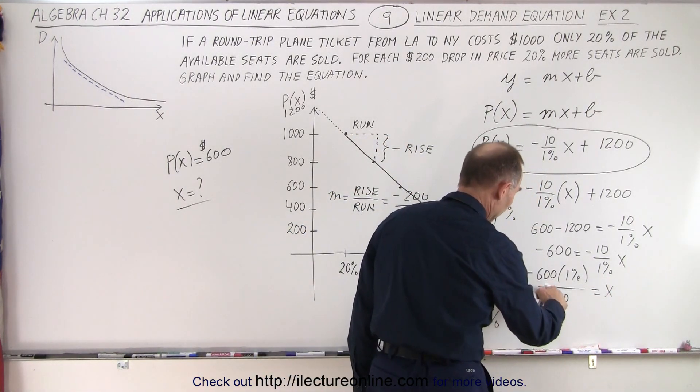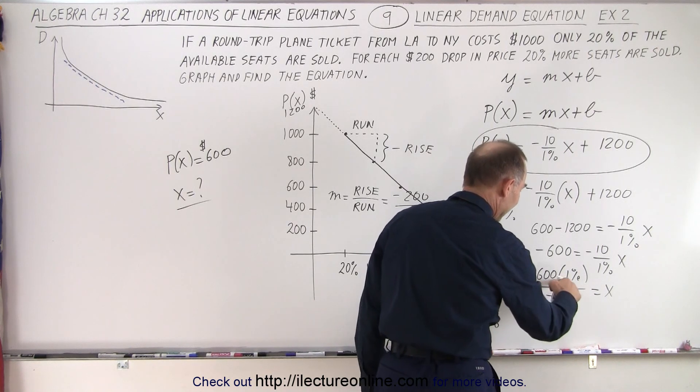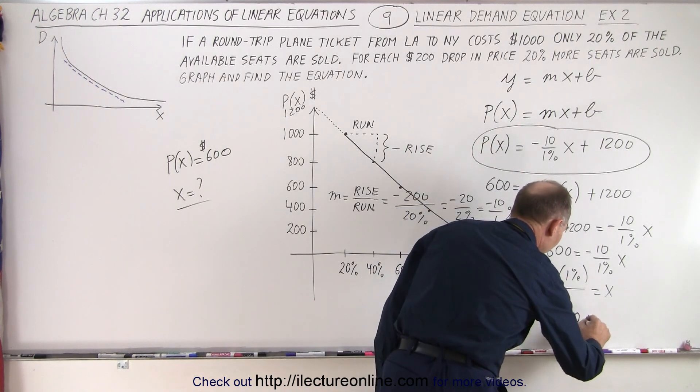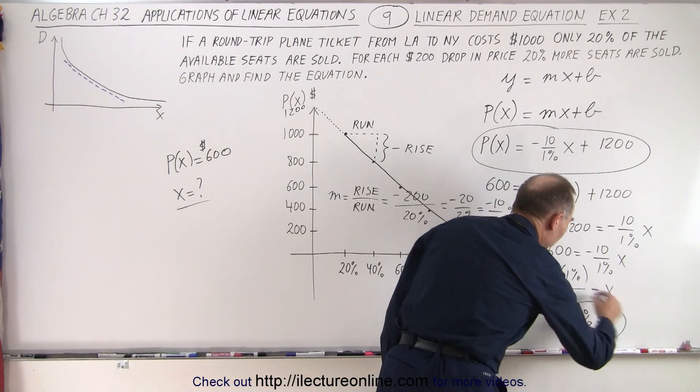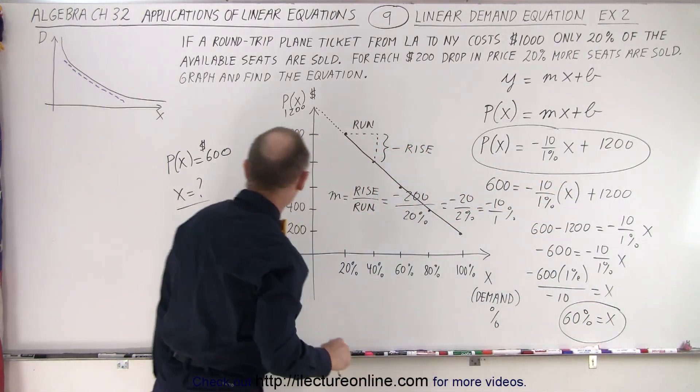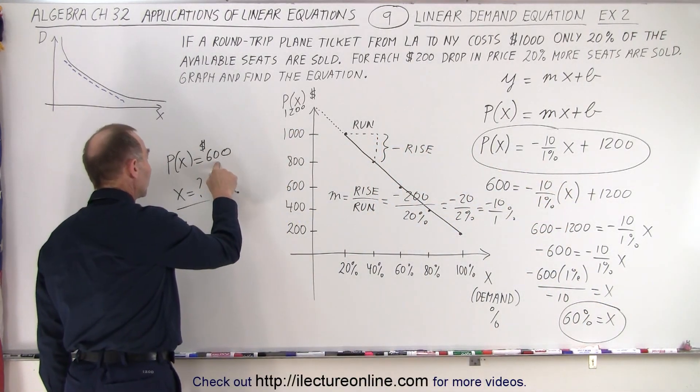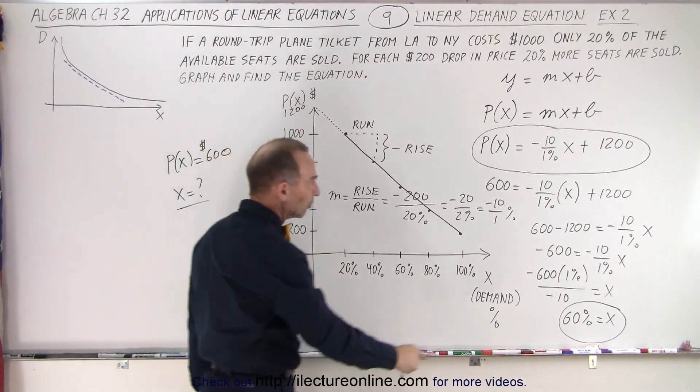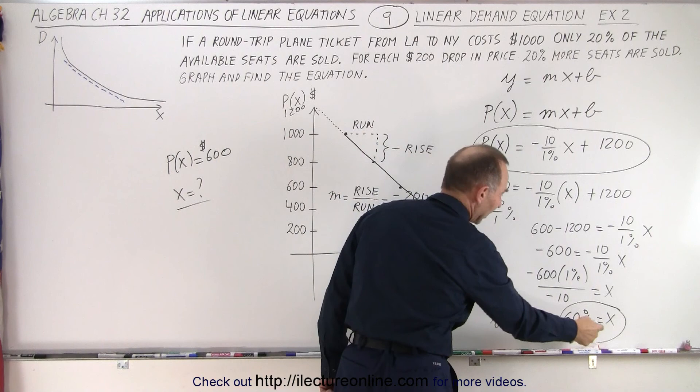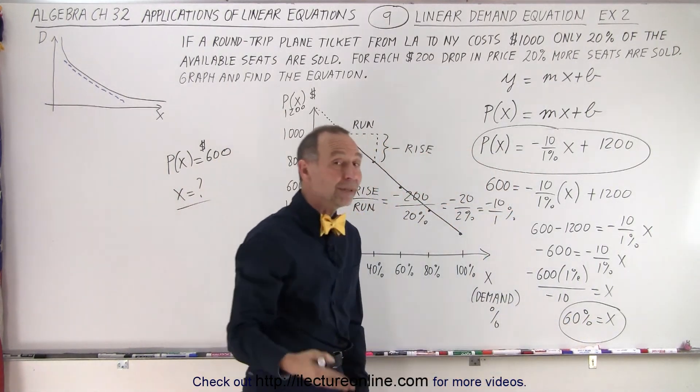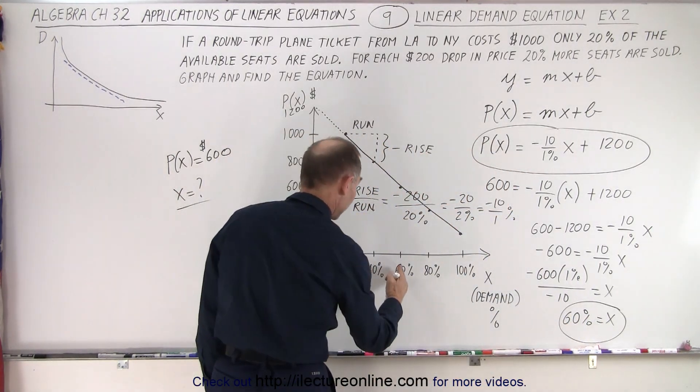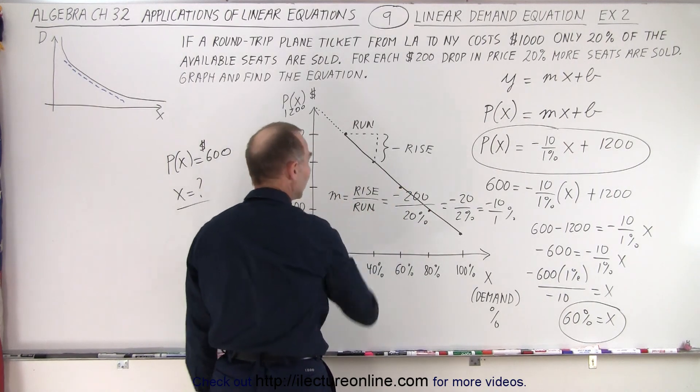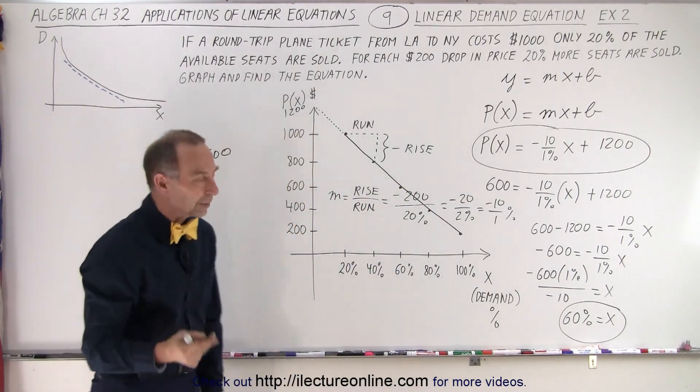The minus cancels out. We have, that would be 60 times 1% or 60% equals x. So here you can see that if they give us that the price is set at $600 and they want to know what the demand will be on the plane, we simply plug it into our equation. We solve for x and we can see that then the demand will be 60%. Of course, graphically, we can see that if we're at 60%, the price would be $600.